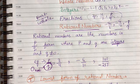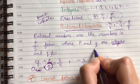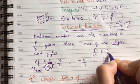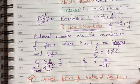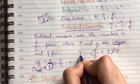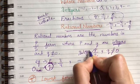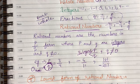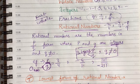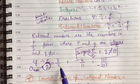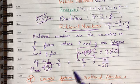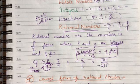What are rational numbers? There are two things: one, they will be in the form of p by q, and two, q will never be 0. And what are p and q? Integers. So this is important in the case of rational numbers. What are rational numbers? They are a type of fraction, but the fractions can also be negative.